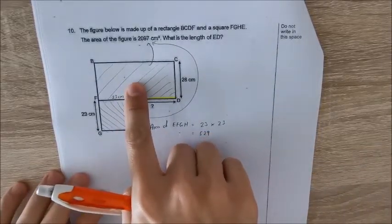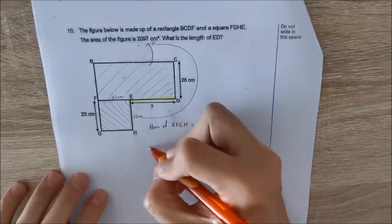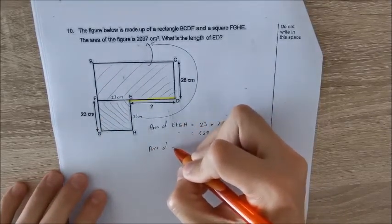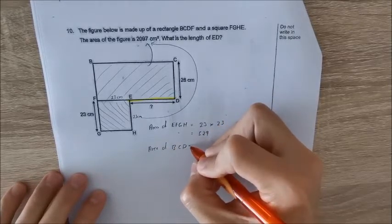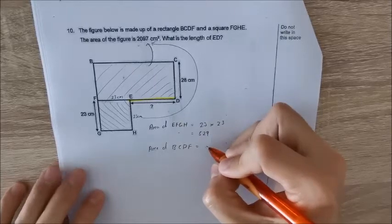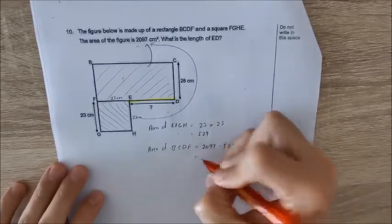We just did a total minus off the area of the square. So the area of BCDF equals to 2097 minus 529, that will be 1568.